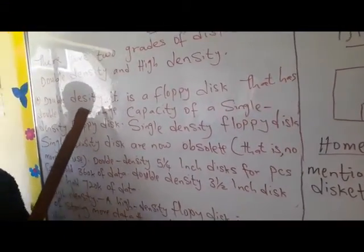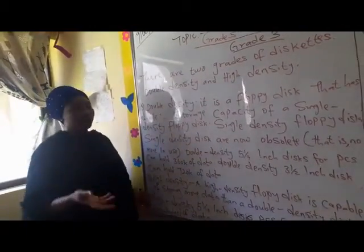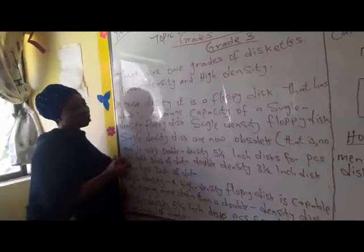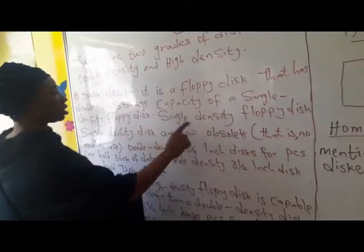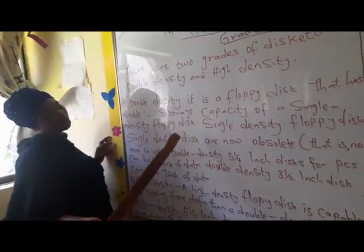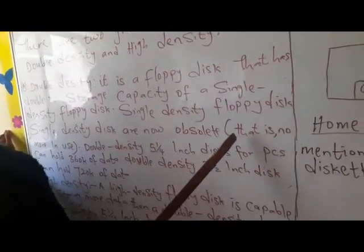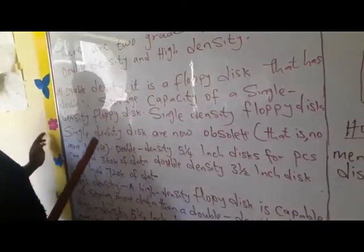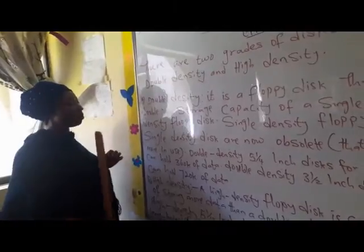What they mean here is that it has double. You can store more than one. So that is what they call double. The other one is single density floppy disk. Single density floppy disk. The single density disks are now obsolete. That is no more in use.